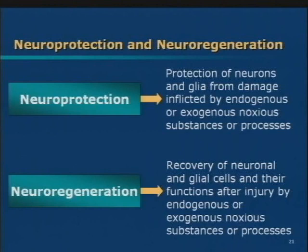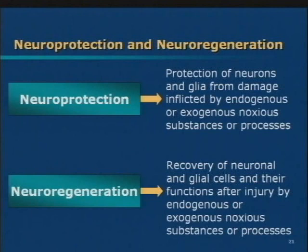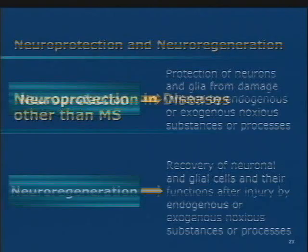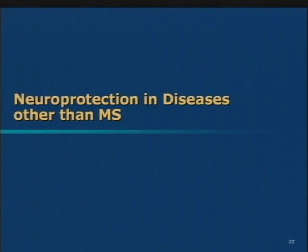Neuroregeneration is an even tougher problem. The damage has occurred — now what? We would like to be able to repair what has been done. Your body tries to do that; the brain does have some repair mechanisms that are quite robust, but they can't keep up with the continued assault from diseases like MS, and so eventually it may fail. This is where other strategies like stem cell research would come in, but we're not going to focus on that in this talk.